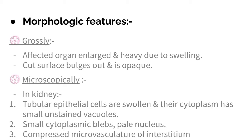When we look microscopically — taking the kidney as an example — the tubular epithelial cells are swollen, and their cytoplasm shows small vacuoles plus the formation of small blebs. The nucleus is not dark; it becomes pale in color.